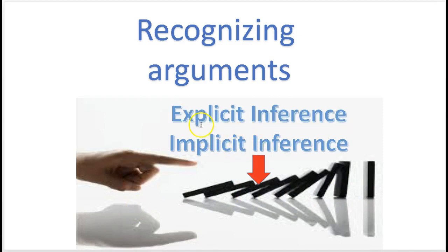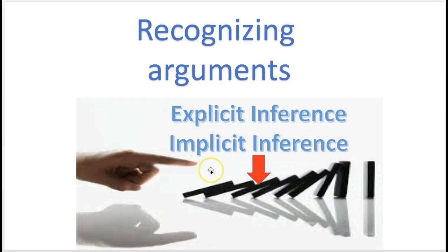The premise will claim to support the conclusion. Now, they'll either do it implicitly or explicitly. If it's explicitly, it'll have words like 'therefore,' or 'wherefore,' or 'the conclusion is this because of this.' So it'll explicitly have words in there that show that they're inferring the conclusion based on the evidence. But there are some arguments that do not have premise or conclusion indicators — we went over that last video.